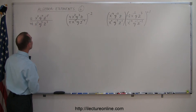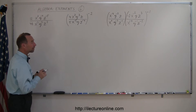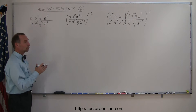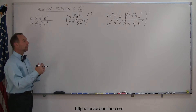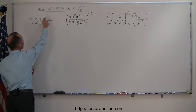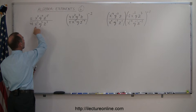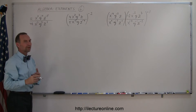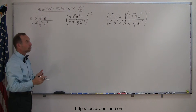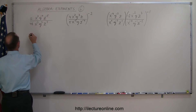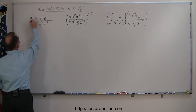Looking at the first one here, what I like to do is bring all the negative exponents to the bottom if there are negative exponents in the numerator, and take any negative exponents in the denominator and move them to the numerator. That's my first step. We don't have to do it like that, but it makes things a little bit easier.